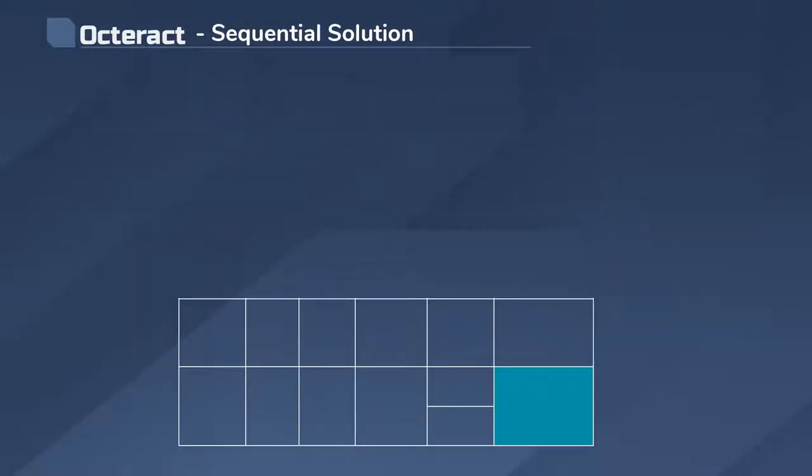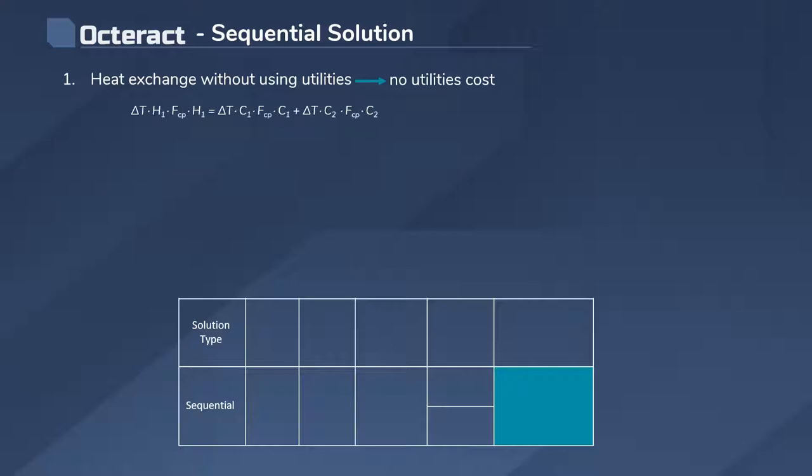Let's look at this logically, all the way thinking of our aim, which is to minimize the costs for the realization of the network. If no utilities are used, then their costs will be zero. Can the hot and cold streams available to us achieve the necessary heat exchange by interacting solely with each other?